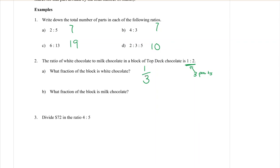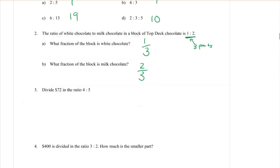Then for part B, what fraction of the block is milk chocolate? That's the two out of the total parts, which is three. And that totally makes sense, I hope. One third of the block is white chocolate and two thirds of the block is milk chocolate, which adds to give one whole block of chocolate.